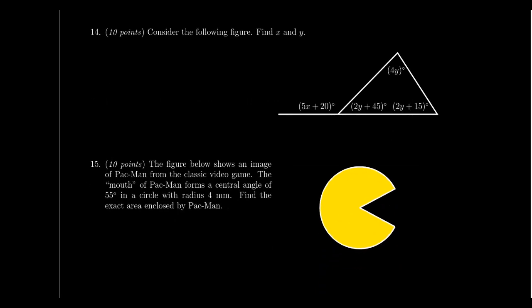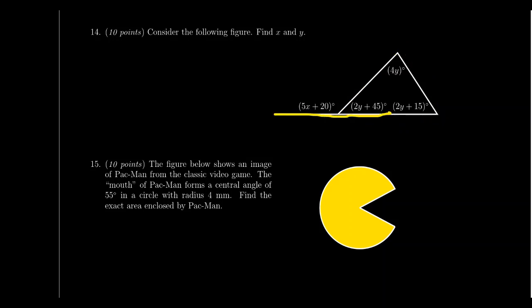Question number 14 will also involve partner angles, but unlike the multiple choice version, this question asks you to solve for unknown quantities. You'll see a triangle with some angles and supplementary angles; use partner angle relationships to solve for unknown values like X and Y. Do a little algebra based upon the geometric relationships. This type of work was heavy in lectures 2 and 3.